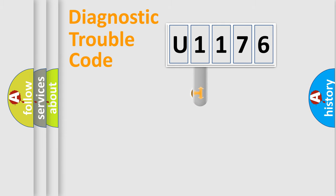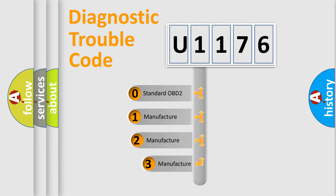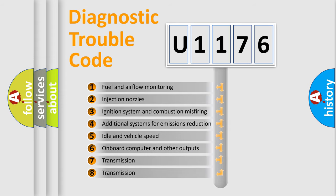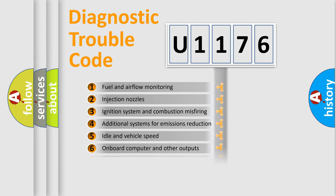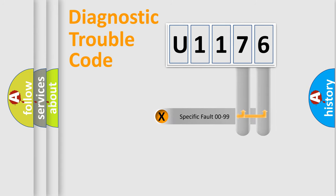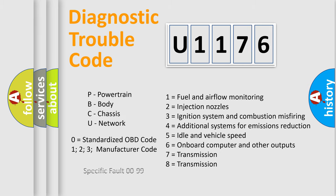This distribution is defined in the first character of the code. If the second character is expressed as zero, it is a standardized error. In the case of numbers 1, 2, or 3, it is a manufacturer-specific error. The third character specifies a subset of errors, and the last two characters define the specific fault within the group.